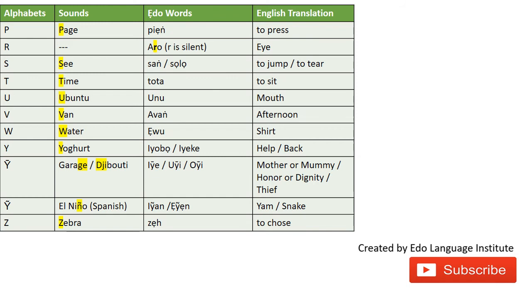Now the third Y sound — it sounds like the Ñ in the Spanish word 'enemigo.' The EDO word for that is 'NYANYA' — 'NYANYA' is the EDO word for yam. And 'NYA' is the EDO word for snake. For the ZE sound, we have 'ZE' which means to choose. There are many other meanings of 'ZE' depending on context, but for now we'll limit it to this one.